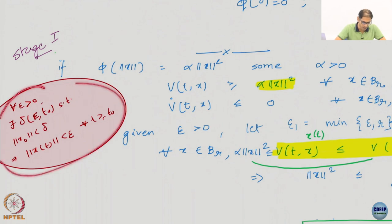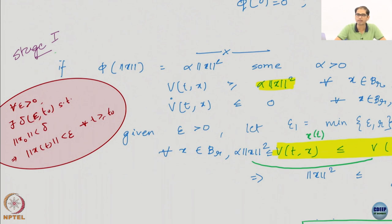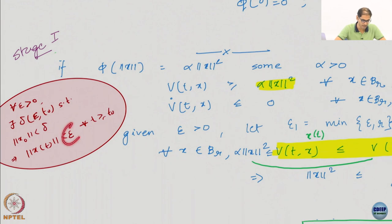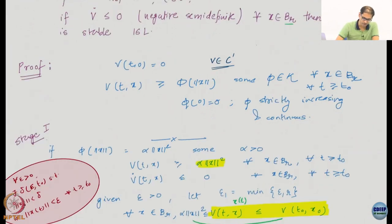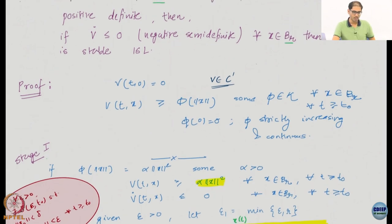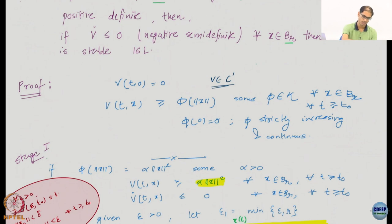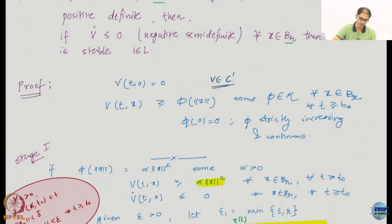The stability definition says: for all ε > 0, there exists δ (which can depend on ε and t₀) such that ‖x₀‖ < δ implies the solutions lie within an ε-ball for all t ≥ t₀. Positive definiteness means V dominates a class-K function of ‖x‖. This class-K function is 0 at 0, continuous, and strictly increasing.